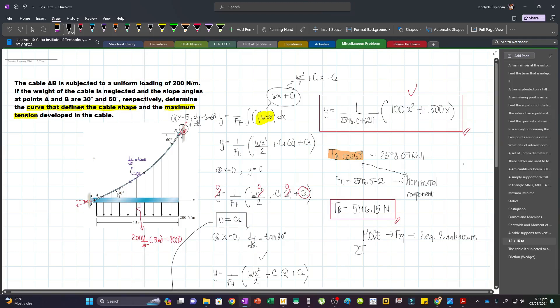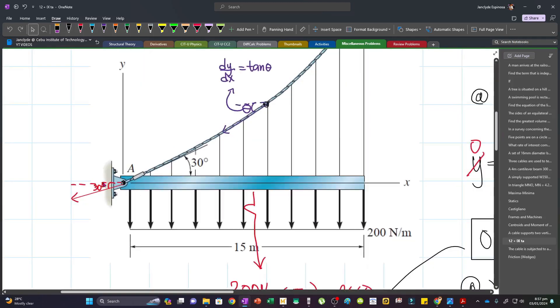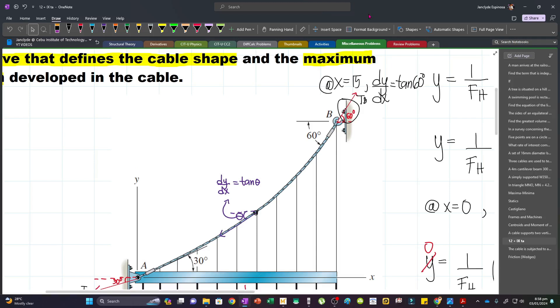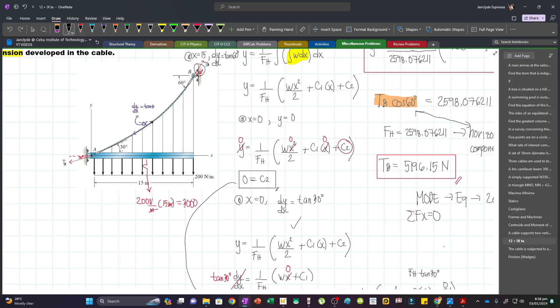Let's first sum up forces horizontal. So summing up forces along X, we have the horizontal component at A. Let's say this is TA and then this is TB. So our horizontal component will be negative TA cosine 30 for the horizontal component of this one.